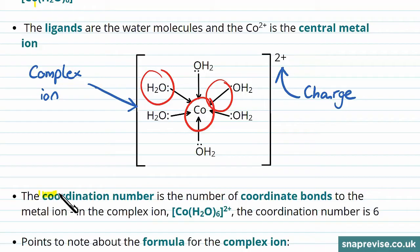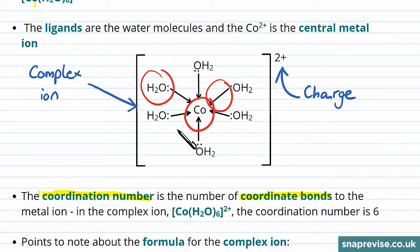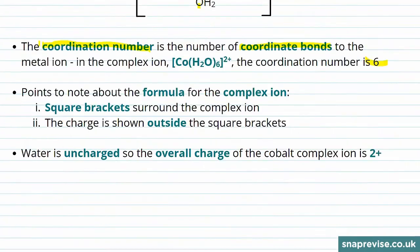Another term we must understand is coordination number. This is the number of coordinate, or dative covalent, bonds to the metal ion. In this example above, we have one, two, three, four, five, six dative covalent bonds, so this complex has a coordination number of six. Points to note are the square brackets, which mark it out as a complex ion, and the charge shown outside of these square brackets.